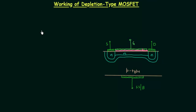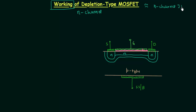In the last lecture we completed the construction of N-channel depletion type MOSFET. You can see on your screen the construction of N-channel depletion type MOSFET. In this presentation we will understand the working of N-channel depletion type MOSFET. The working is somewhat similar to the working of N-channel junction field effect transistor, but there is one extra feature which I will explain after some time.